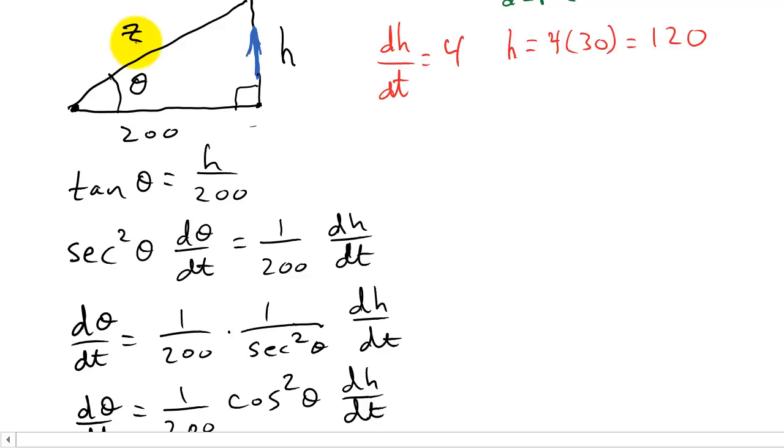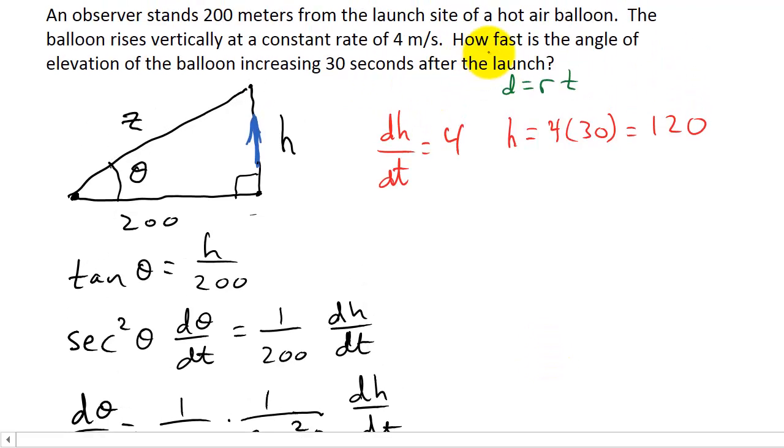All right, but notice I don't have a value for z. I need to know what z is after 30 seconds, because that's what we're looking for. How fast is the angle of elevation of the balloon increasing 30 seconds after the launch? So I need to know what z is at 30 seconds. Well, I know what h is 30 seconds after the launch. It's 120, so I can use the Pythagorean theorem to figure out what z is. So z is just equal to the square root of 120 squared plus 200 squared. And so z is equal to 233.24.